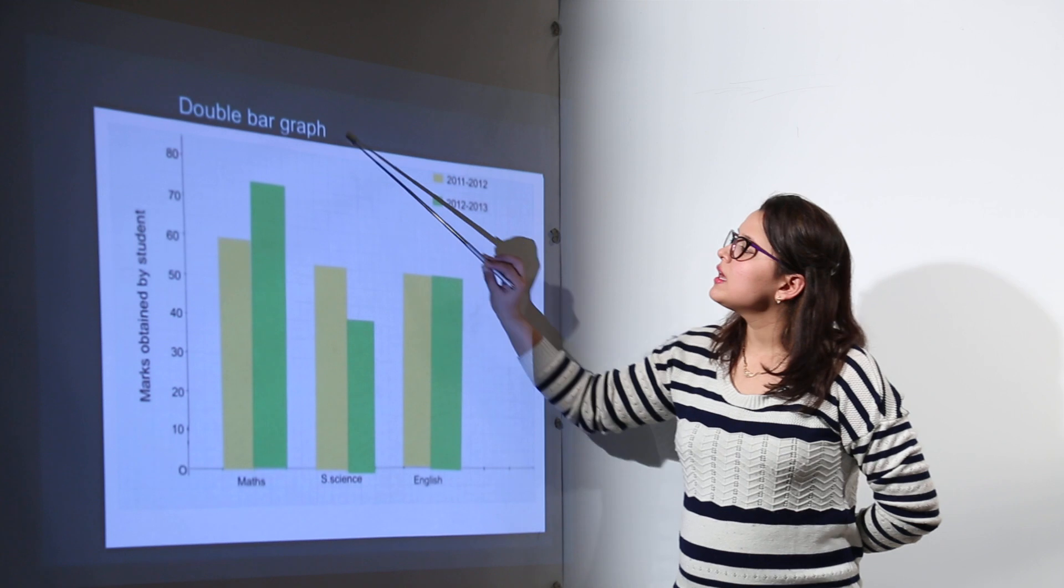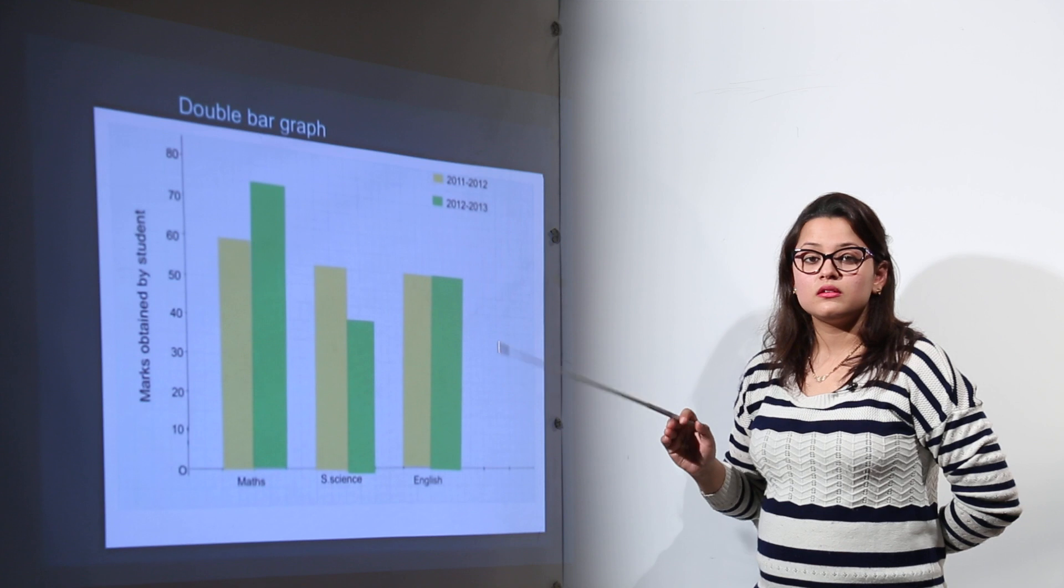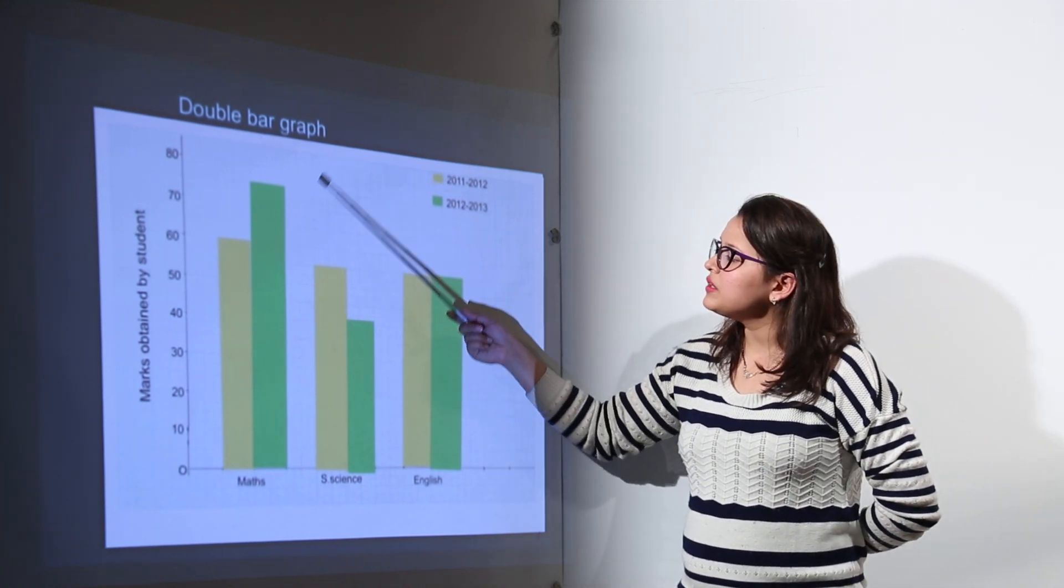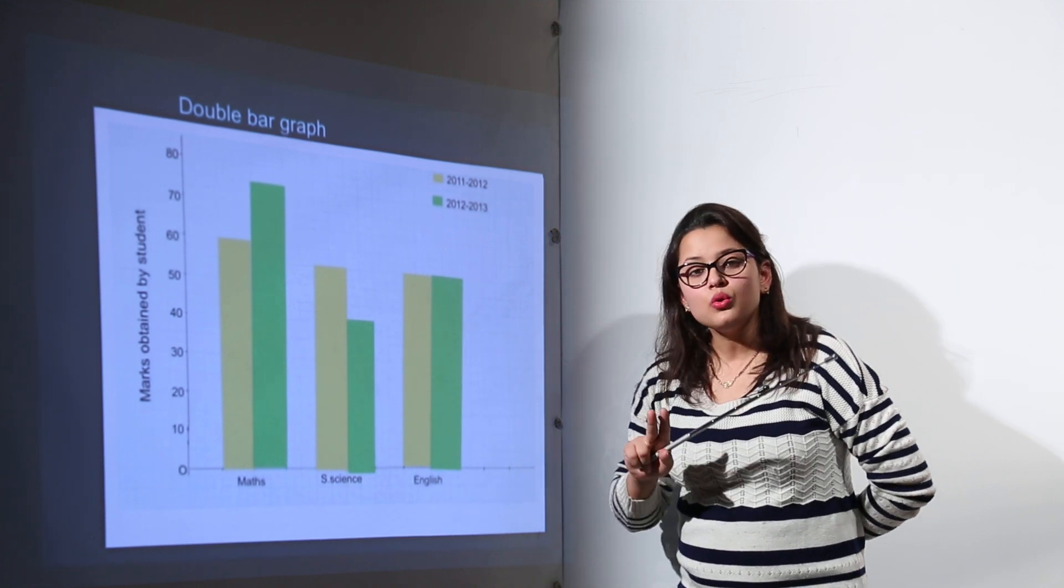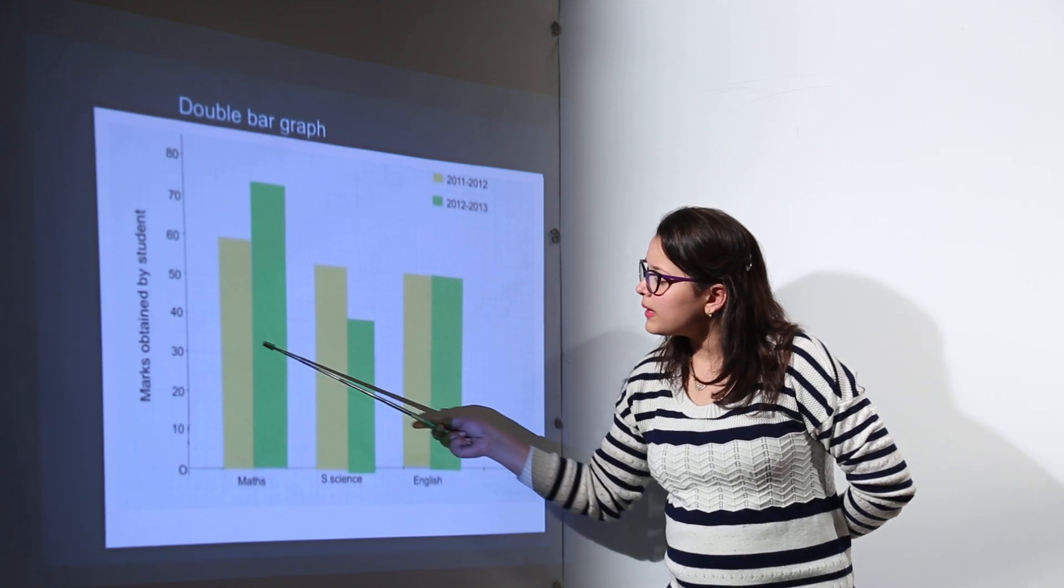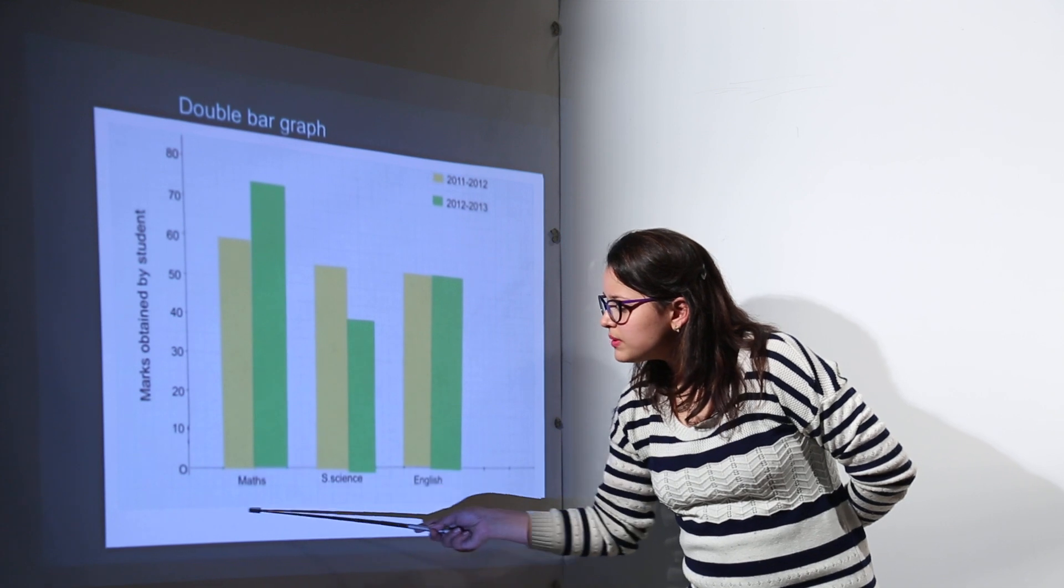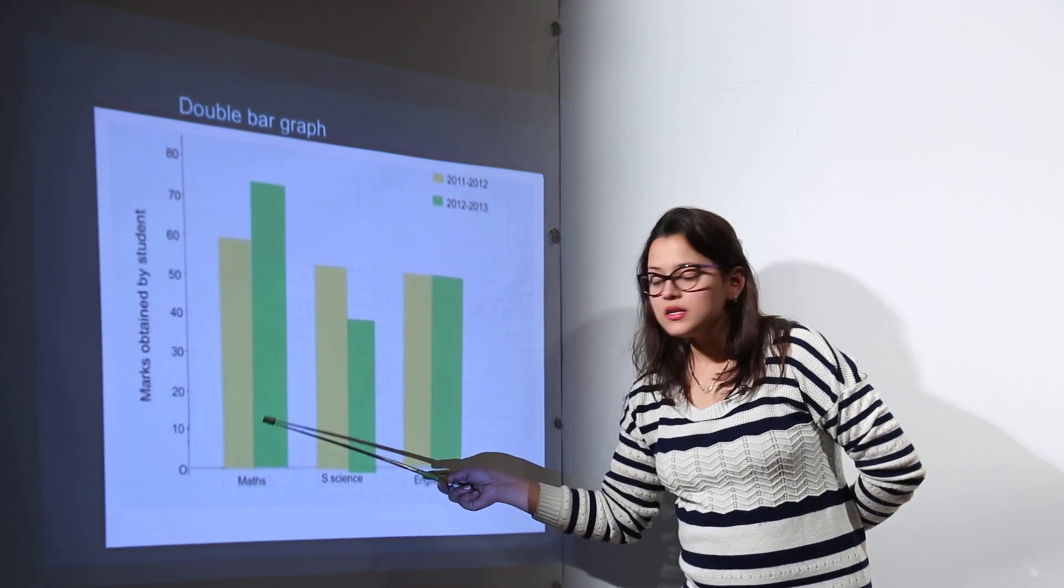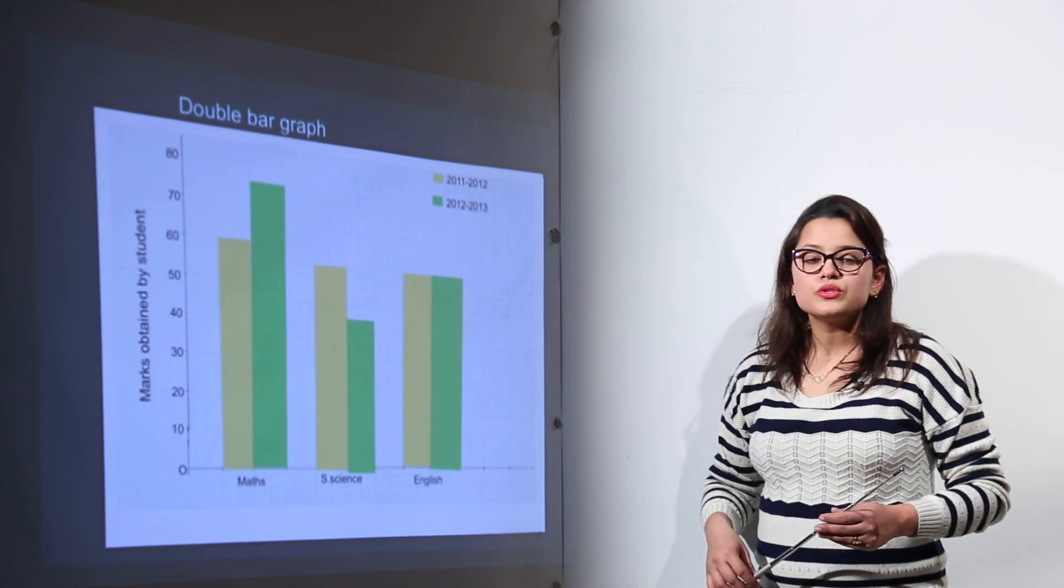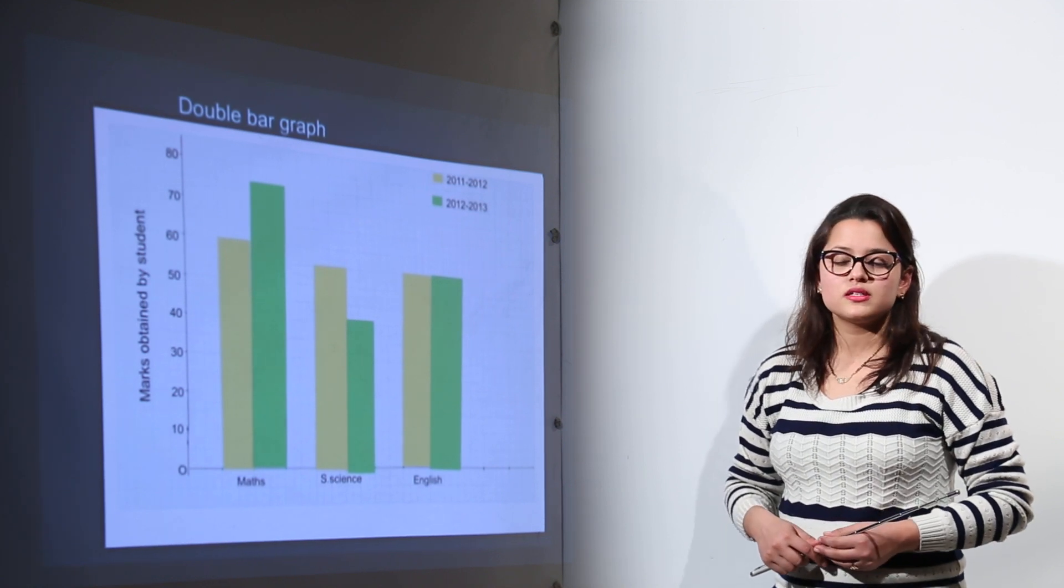So basically I have told you that simple bar graphs are used to represent the comparison between two quantities but for double bar graphs we can actually compare two quantities simultaneously at the same time. For the simple maths subject we have been comparing the marks of the student for two years. So this is how we can use the bar graph representation for the comparison of quantities or comparison of data.